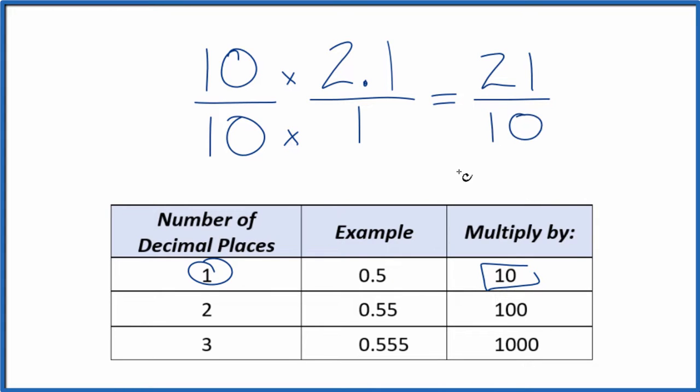And we have our fraction. This is an improper fraction. It's 21 over 10. The numerator is bigger than the denominator.